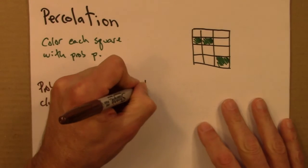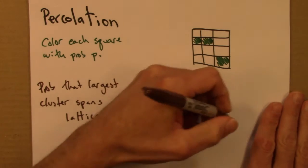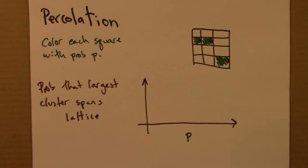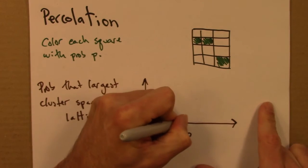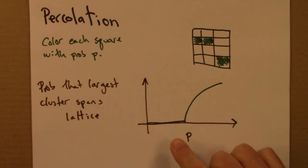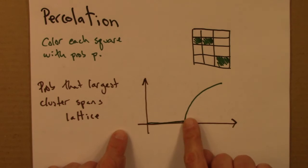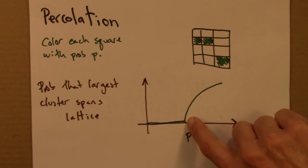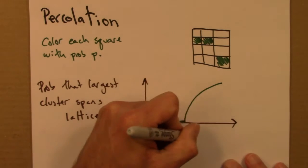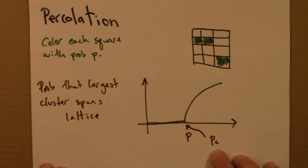And so, it turns out that if one were to make a plot of this quantity, one would see behavior that looks something like this. So, for a whole range of p-values, there's no probability that the largest cluster spans the lattice. But at some special critical value of p, the probability that we have spanning goes up suddenly from zero. And this starts with an infinite slope. It goes straight up, initially. So, this particular, this special p-value is known as pc. That's the critical p-c for critical. It's the critical value at which the transition occurs.